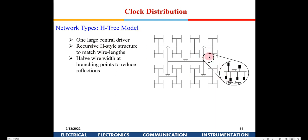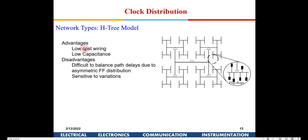At each of these nodes you have flip-flops connected. Some advantages: it is low-cost wiring with low capacitances. The disadvantages are that it is difficult to balance path delays due to asymmetric flip-flop distribution. If a flip-flop is connected at different H-tree levels, it may have a different delay — you have to connect flip-flops at the same H level.